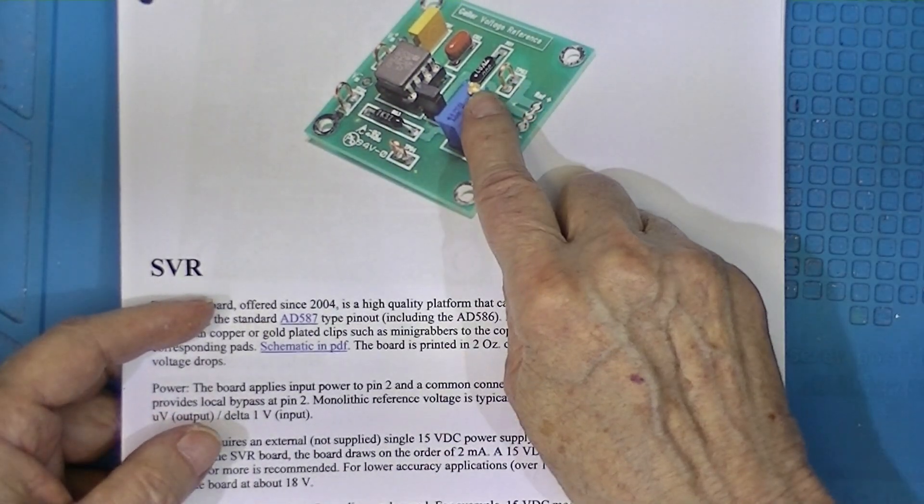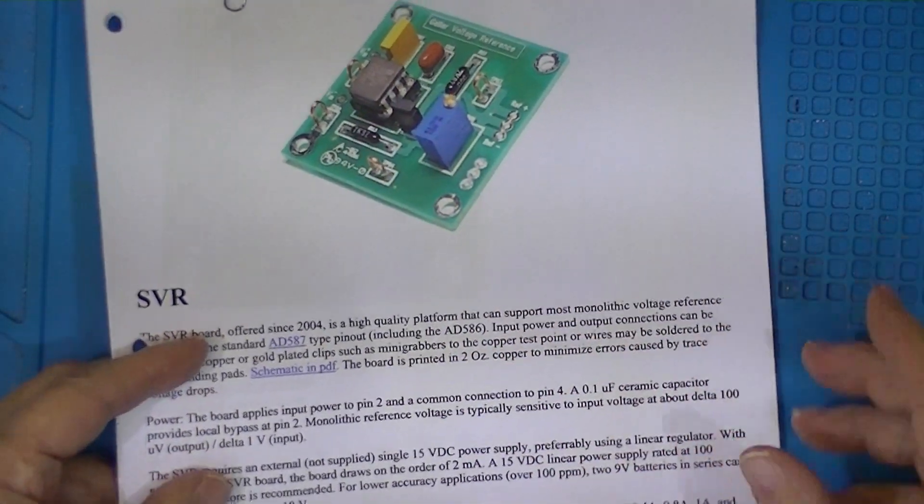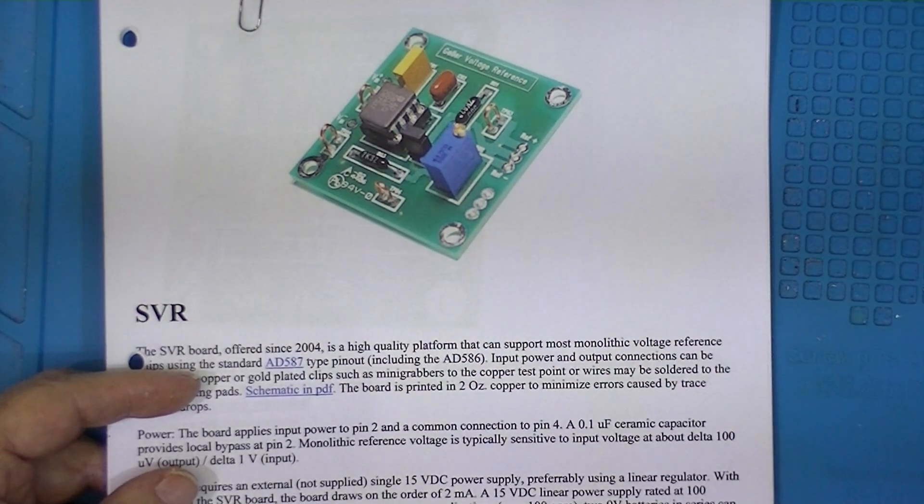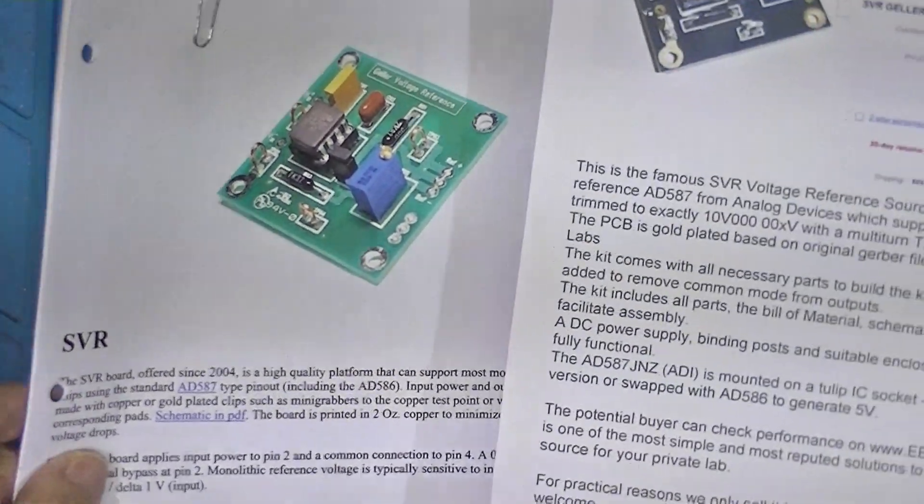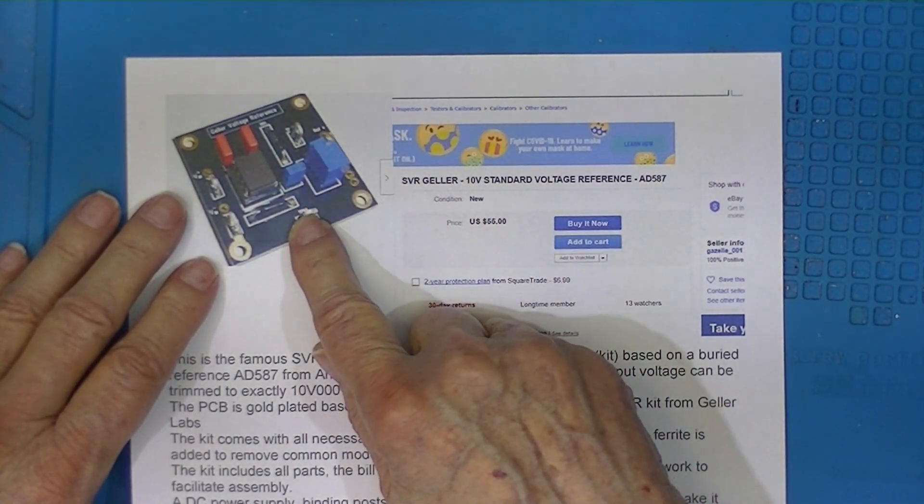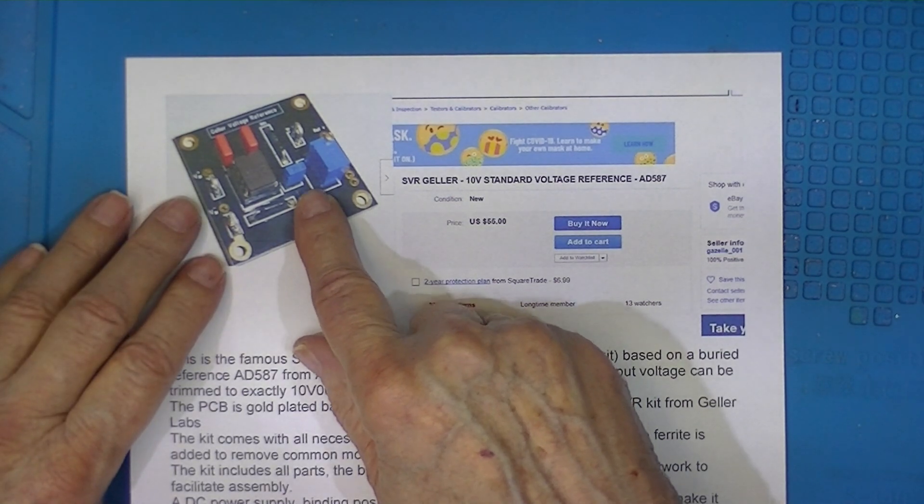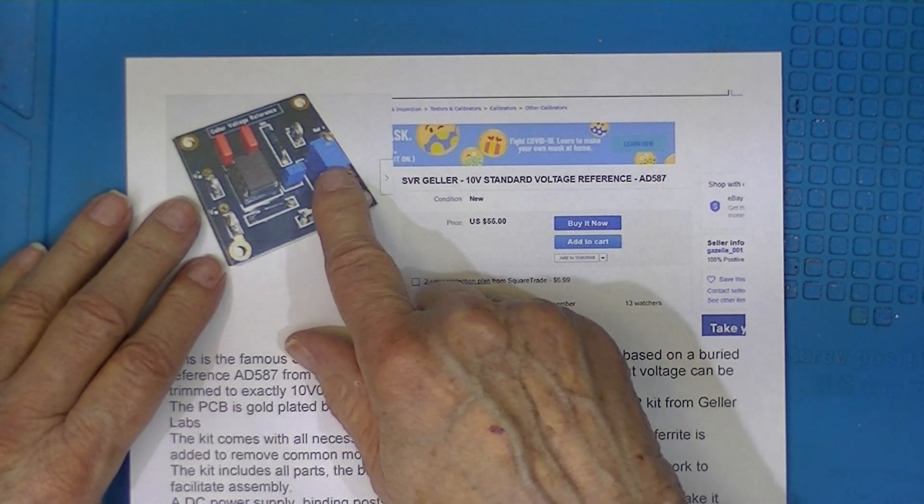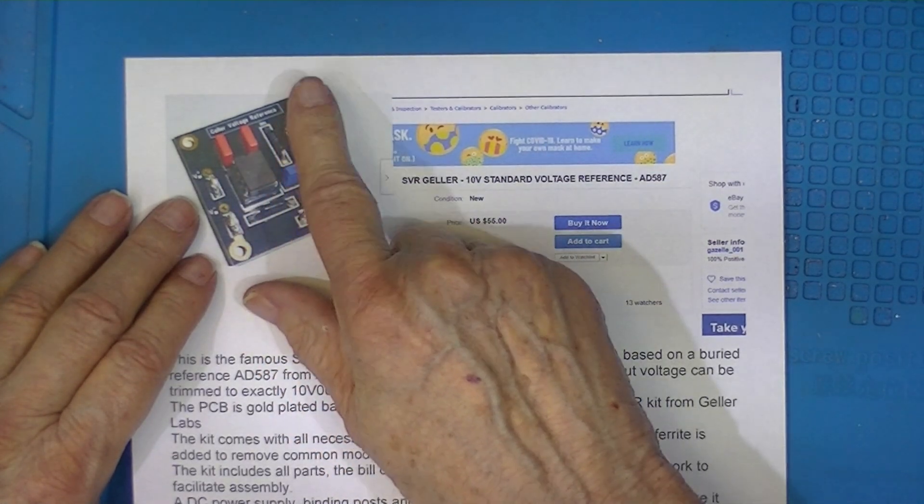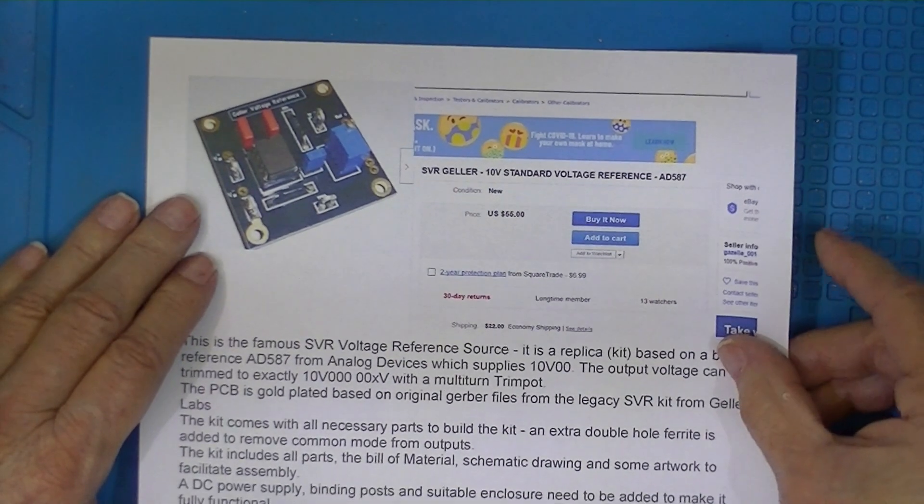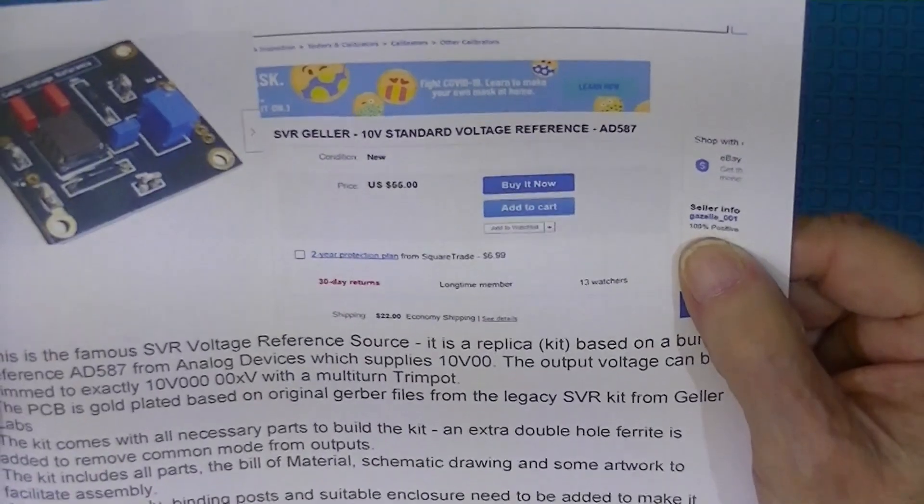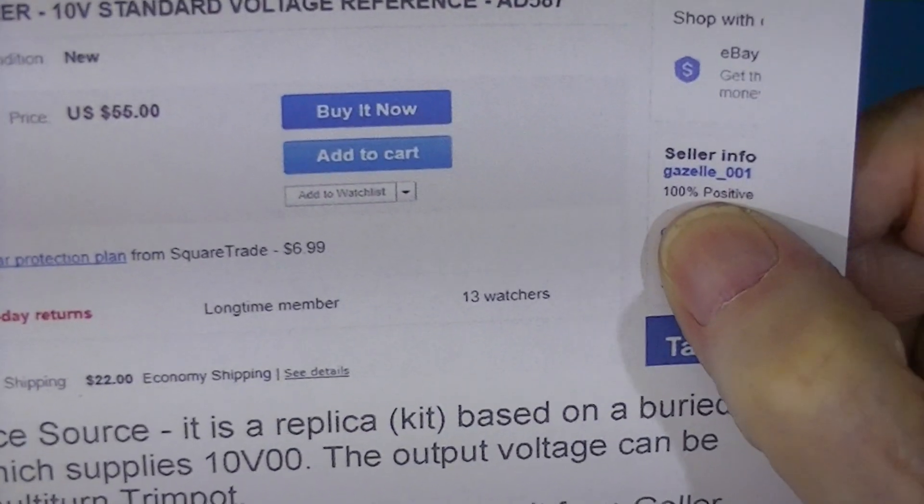Now, although Geller Labs closed in 2011 maybe, this board is still available on eBay as a completed 10 volt standard. It has the trimming option installed, and in this photograph selected—that is, the trimmer circuit is hooked to pin 5. This is actually Mark Geller, and I believe is manufactured with his permission. The board assembled costs $55 plus $22 shipping. If you are interested, the seller is this fellow here.